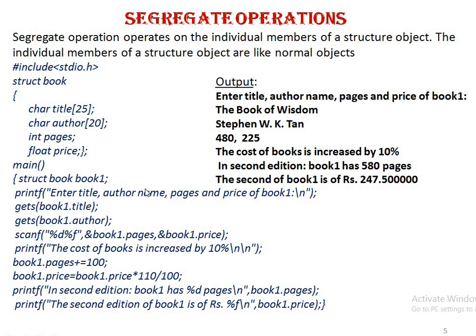For segregating operations — handling individual members — individual members can be handled as normal variables, but the dot operator is required. Here, a structure has been created with title, author, pages, and price. A variable book1 has been created of that structure type. All entries are given, then the cost is increased by 10% and number of pages by 100, using simple arithmetic expressions stored back into the member variables.